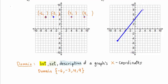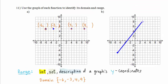Now let's determine its range. The range of a function is a list, set, or description of a graph's y-coordinates. Let's look at each of those points again. This point right here, its y-coordinate is 5. For the next point, its y-coordinate is 5 as well.